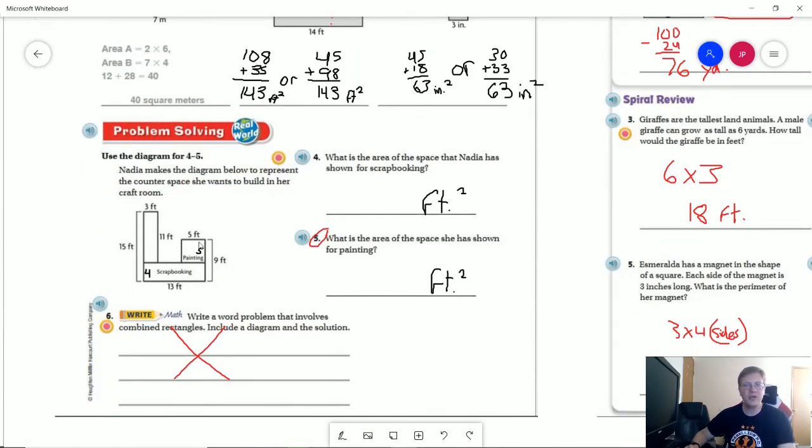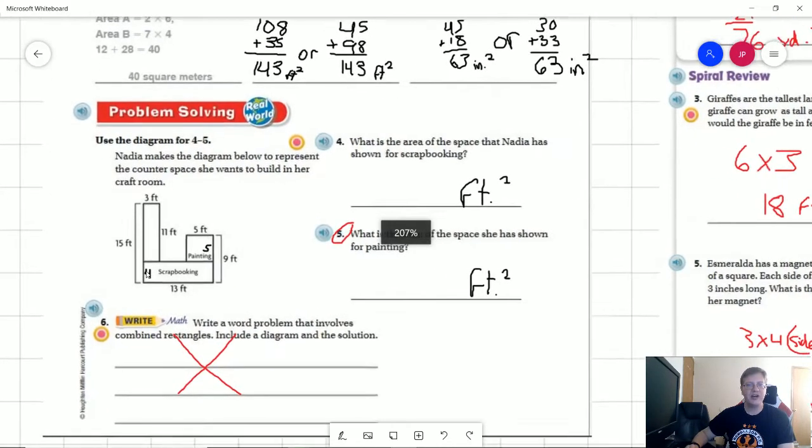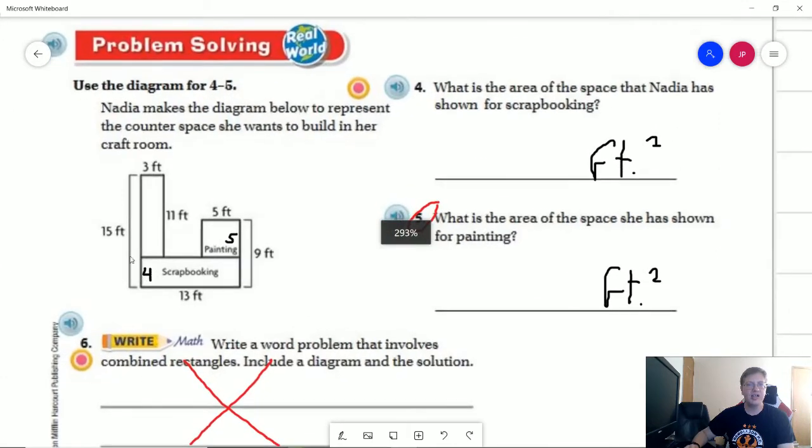So the trick for number 4 and number 5 was to figure out our missing numbers. So the first one we can find, I'm going to zoom in just a touch here, by doing 15 minus 11 and so this bottom portion that's still left is going to be worth 4 feet. And so we would take that over to this side, we have a total of 9 feet, we use our measurement of 4 feet from here, subtract and this measurement is going to be 5 feet.